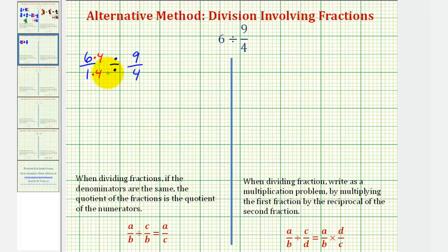This would give us the quotient 24 fourths divided by 9 fourths. So now we want to find how many 9 fourths there are in 24 fourths.